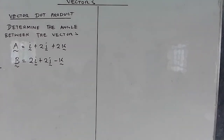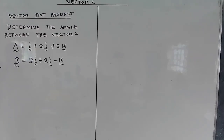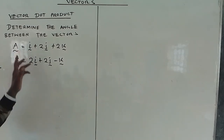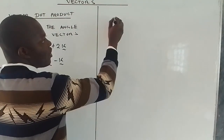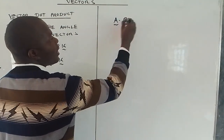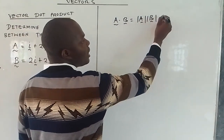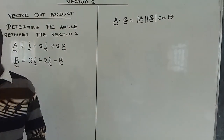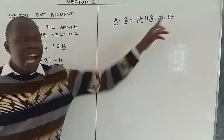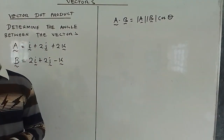In this next example, determine the angle between the vectors a = i + 2j + 2k and b = 2i + 2j - k. Anytime you want an angle between two vectors, that is the vector dot product. We know that if you have two vectors a and b, then a dot b is given by the magnitude of a times the magnitude of b times the cosine of the angle between them. What they want us to determine is that angle theta between vectors a and b.